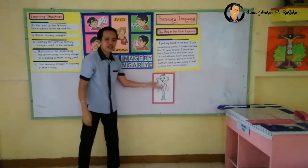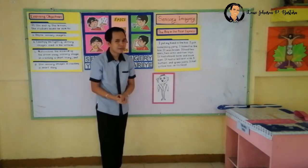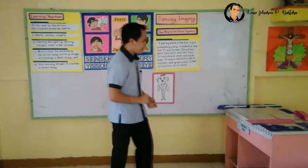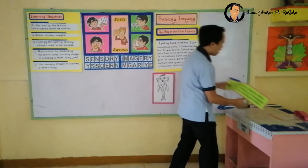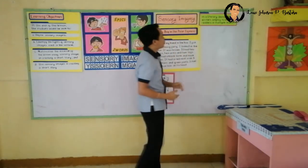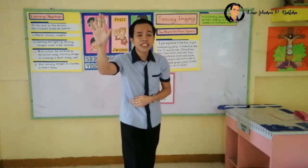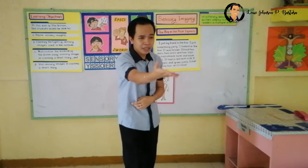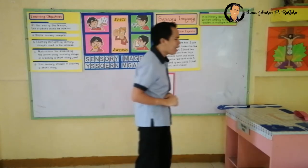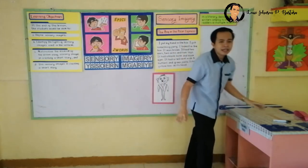Now, based on this activity and by relating this excerpt to this drawing, can you define sensory imagery? Yes, Veil — that's right! In other words, sensory imagery is a literary device that writers employ to engage readers on multiple levels. How do readers engage on multiple levels? Through the use of the five senses. What are these five senses? Raise your hand and answer. Yes? Precisely!